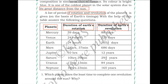Mercury takes 59 Earth days to complete one rotation on its axis and 88 Earth days to complete one revolution. The first column here is the duration of one day on that planet, and the second column here is the duration of one year on that planet.